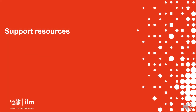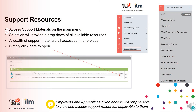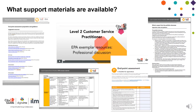Access support materials from the main menu on the dashboard. The selection will provide a dropdown of all the available resources. A wealth of support materials can be accessed in one place. Any employers and apprentices given access to EPA Pro will only be able to view and access support resources applicable to them. Examples of available support materials include welcome packs, gateway support, sample tests, recording forms, FAQs and useful links.